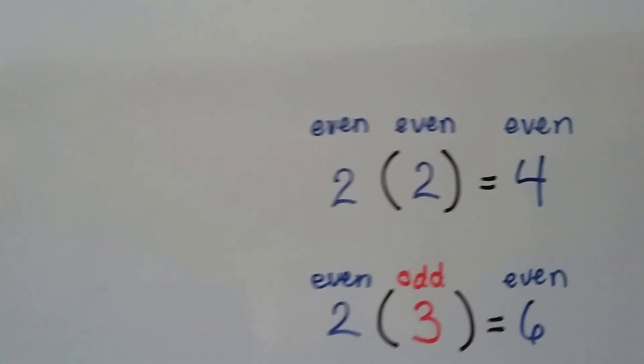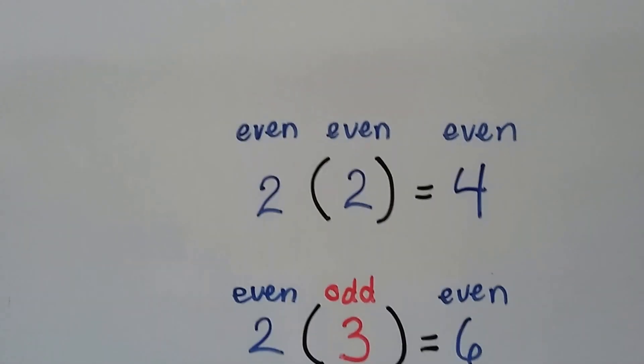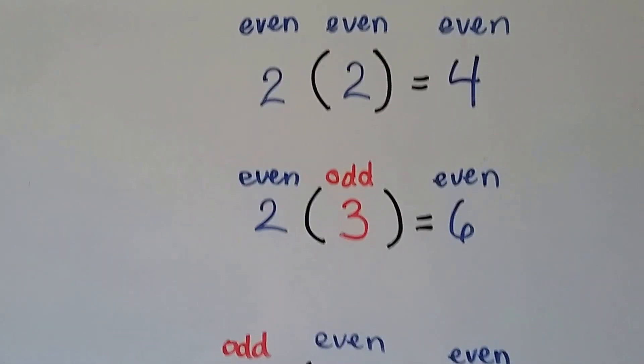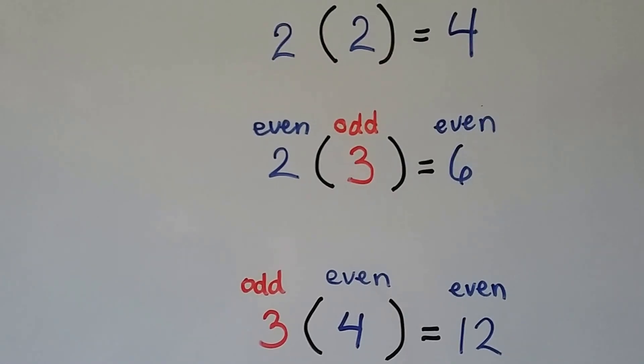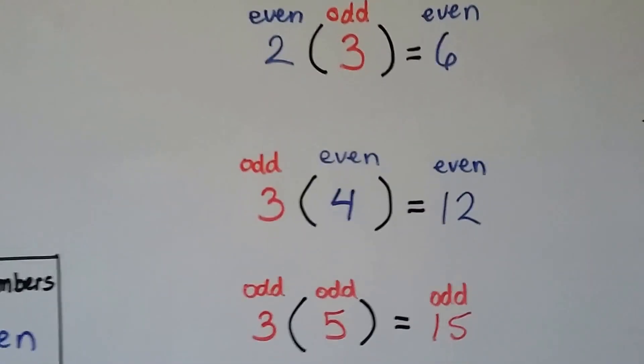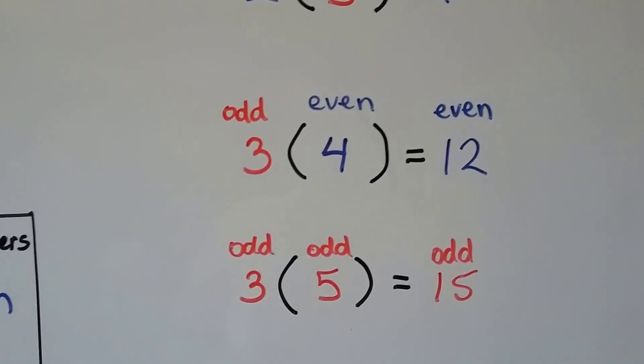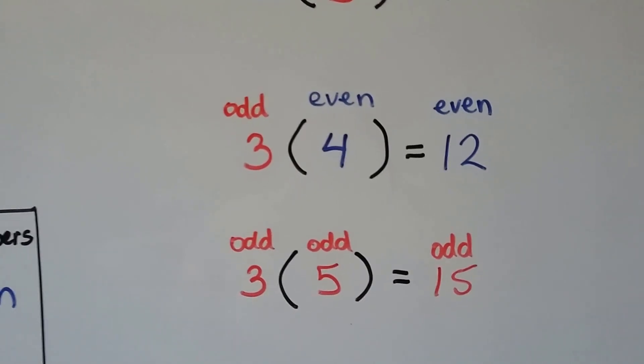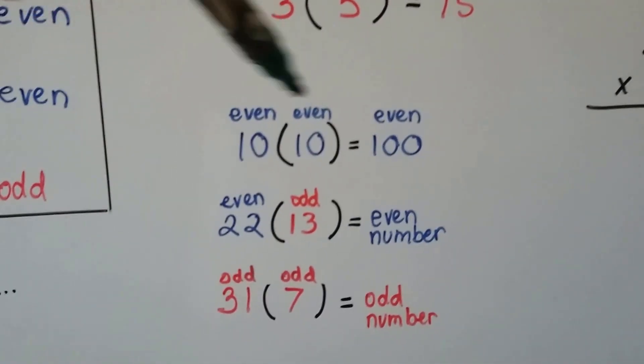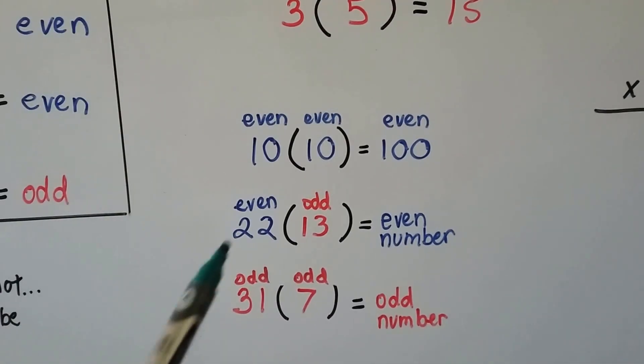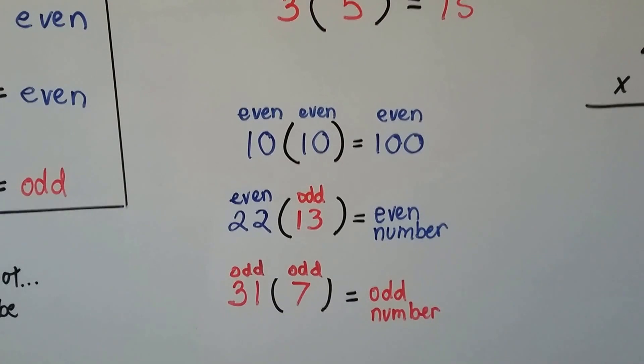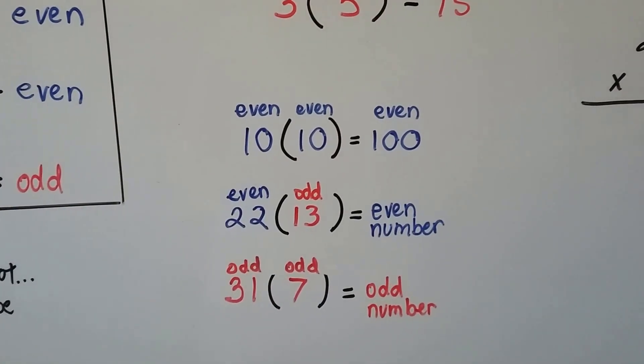When we multiply an even two by an even two, we get an even four. When we multiply an even two by an odd three, we get an even. When we multiply an odd three by an even four, we get an even. See how we keep getting even? But when we multiply an odd three times an odd five, we get an odd 15. So if both factors are odd, the product's odd. If both factors are even, the product's even. If you have one of each, an even and an odd, it's going to be even. If they're both odd, then it's odd.